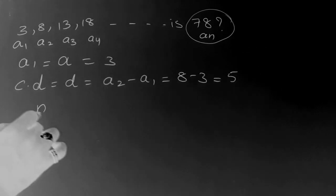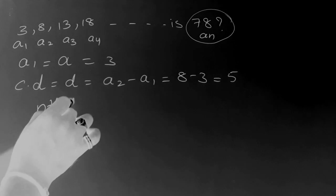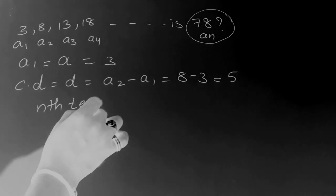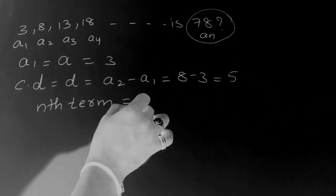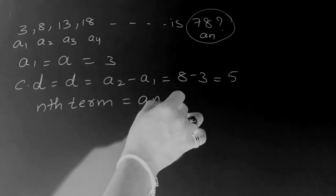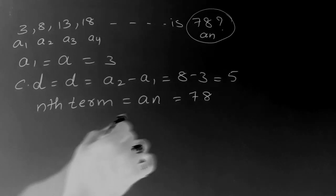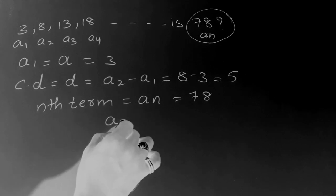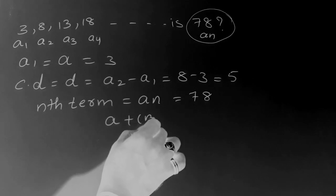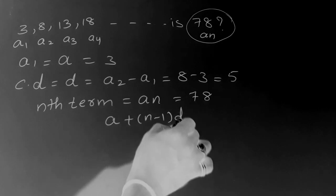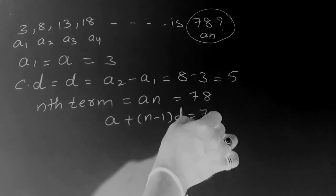So now we know that the nth term, and it is given that an is equal to 78. We know that an formula is a plus (n-1) into d, that is equal to 78.